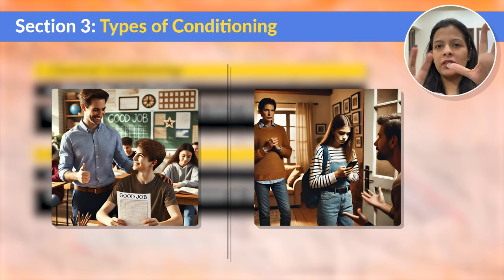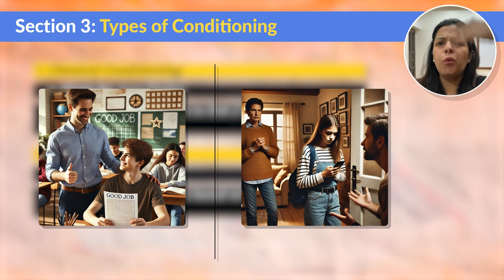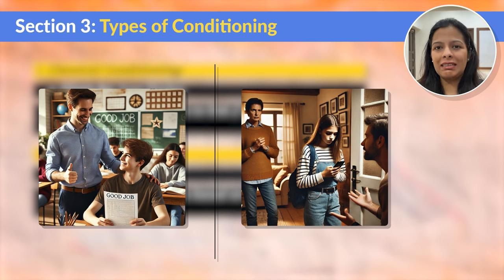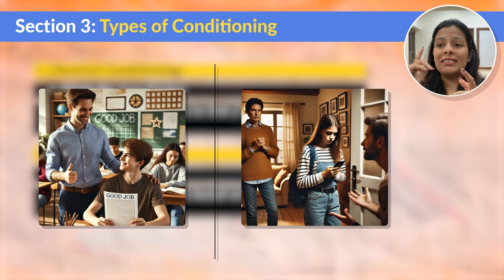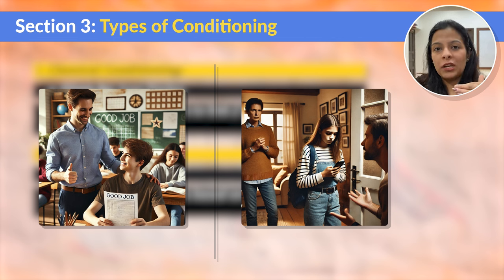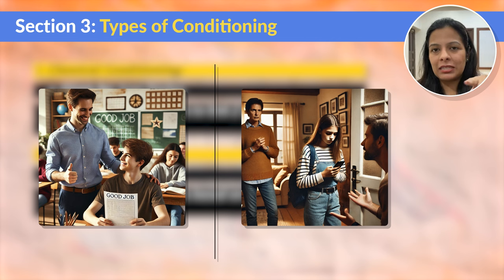Let's take another example. There is a teenager who keeps coming home very late at night, past midnight. As a consequence, his parents take away his phone for a week. This taking away of the phone is a form of punishment, discouraging the behavior of coming home late. When the teenager understands that every time he comes home late his phone will be taken away, he starts associating this. He learns that breaking the curfew has a negative outcome, and that is the reason why he will not do it again. He knows he will receive criticism or punishment, so he decides not to repeat that behavior. This positive and negative reinforcement is what operant conditioning is all about.